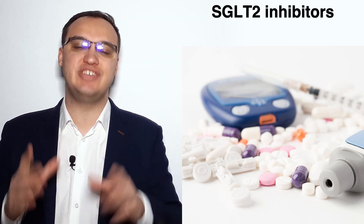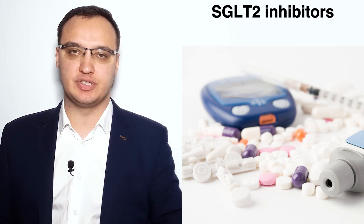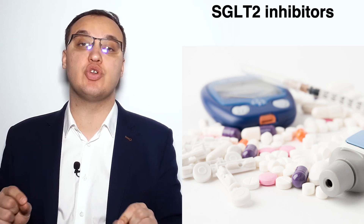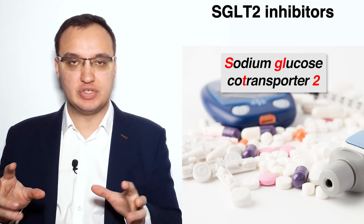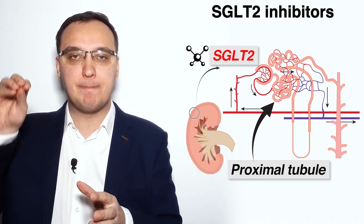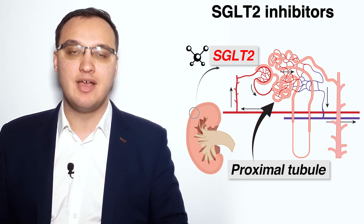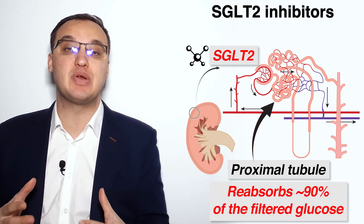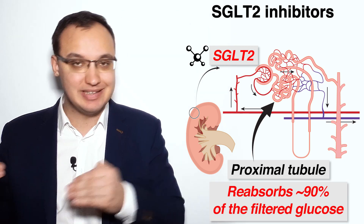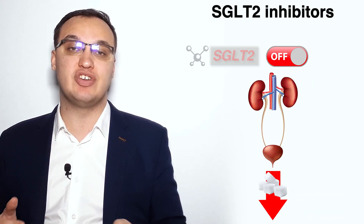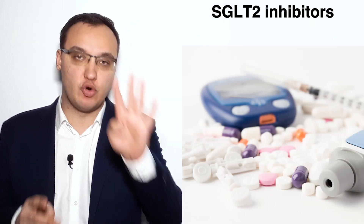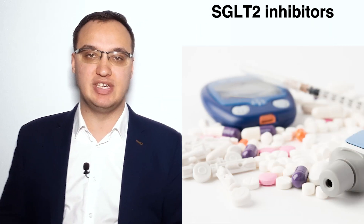Today we look at SGLT2 inhibitors. SGLT2 is an abbreviation of sodium glucose co-transporter 2, and this molecule is found on the proximal tubule of the kidneys, which usually reabsorbs about 90% of the filtered glucose. This SGLT2 molecule is blocked by inhibitors, and thereby the urinary glucose excretion is increased. We have four types of SGLT2 inhibitors.